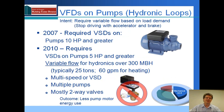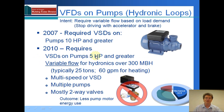Let's move on to the heating and hydronic systems found in complex systems. There's a reduction in the requirement for variable speed drives on pumps — it went from 10 horsepower down to 5 horsepower. That means any pump 5 horsepower and larger should have a variable speed drive on it.